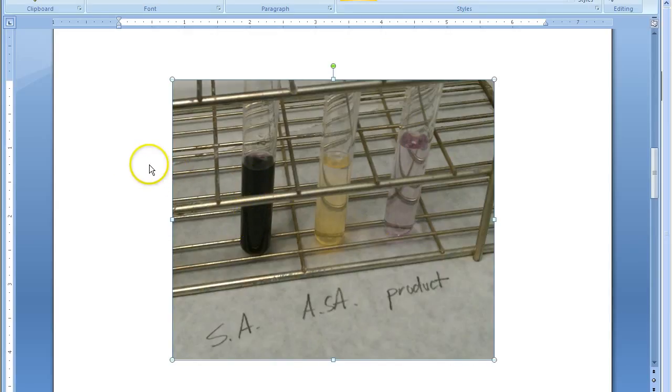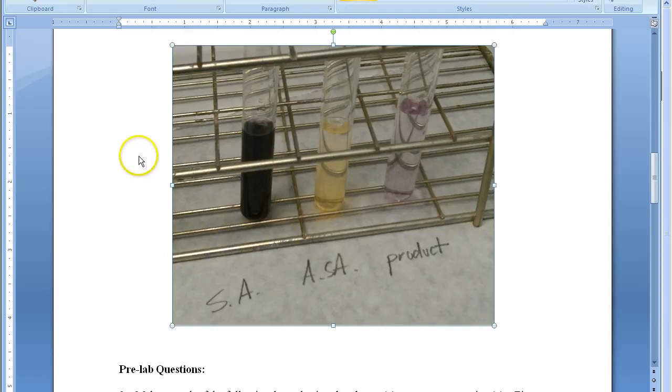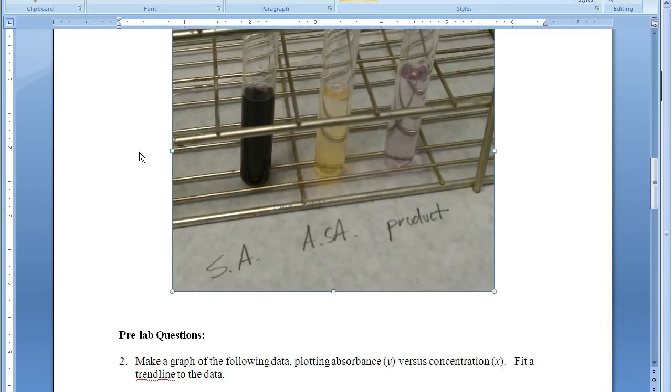So you'll prepare a series of salicylic acid standards. You'll start with a very strong concentrated version like this deep purple one, and then you'll dilute it down and record the absorbance of each of those known concentrations. This is very similar to what would have been done in the iron content experiment.